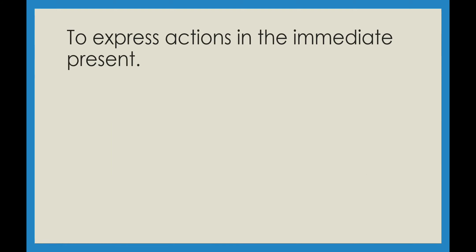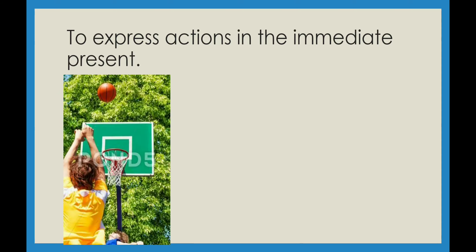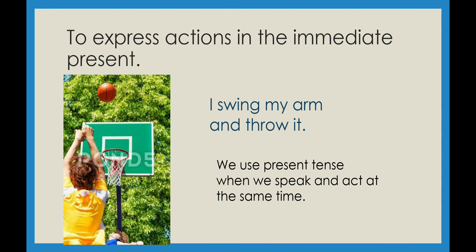Fourth, we use simple present tense to express actions in the immediate present — things taking place right now. For example: I swing my arm and throw it. Here the person is explaining the action they are doing at that very moment. When we speak and act at the same time, we use the present tense.